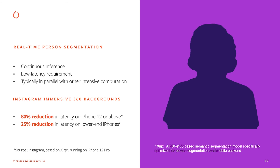Real-time segmentation is a feature that can really benefit from hardware acceleration. Imagine the case of trying to determine the foreground of users from their background for a virtual green screen effect. You want to run this continuously at low latency to provide a responsive experience to users. The Instagram team is now testing PyTorch Core ML Delegate for their immersive 360 background feature. By offloading the computations from CPU to Core ML, they are seeing 80% latency reduction on iPhone 12 Pro or above devices and 25% latency reduction on lower-end iPhones.